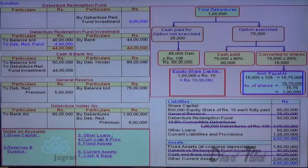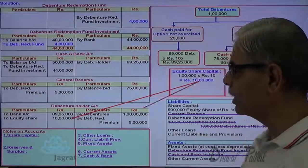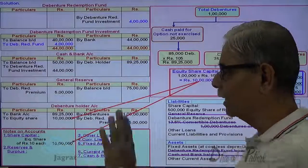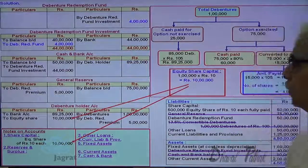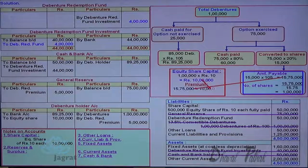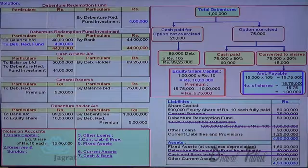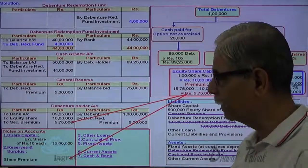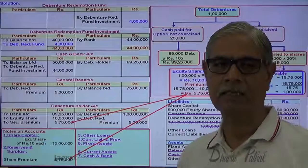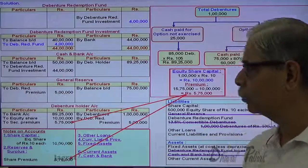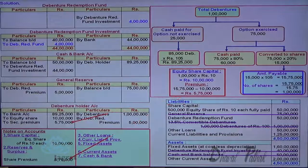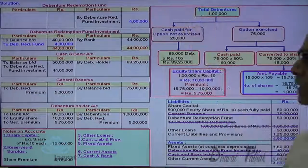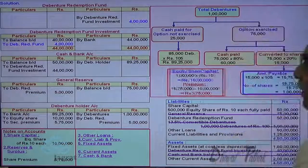This is the equity share capital given. Debenture holders account debit, equity share capital account credit — I write ₹10 lakhs in capital. Security premium: ₹15,75,000 minus ₹10,00,000 = ₹5,75,000 is the security premium. So debenture holders account debit, security premium ₹5,75,000 credit. This transaction is recorded in the notes to accounts.